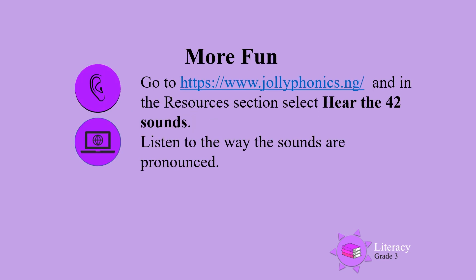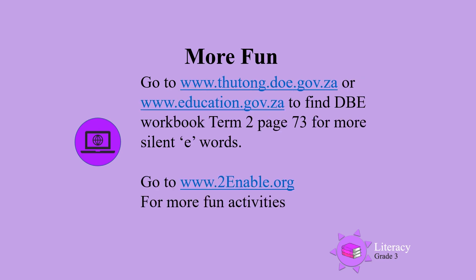For more fun, go to the Jolly Phonics website and in the resources section, select 'Hear the 42 Sounds' and listen to the way the sounds are pronounced. You can also go to the DBE website and find the DBE workbook, term 2, page 73, for more silent E words. Go to www.toenable.org for more fun activities.